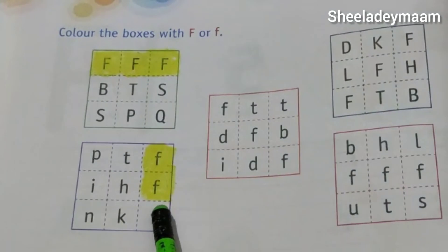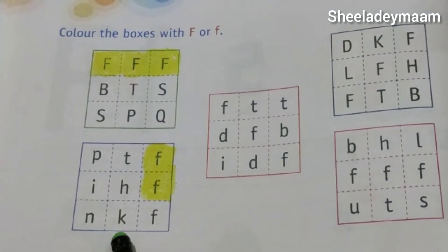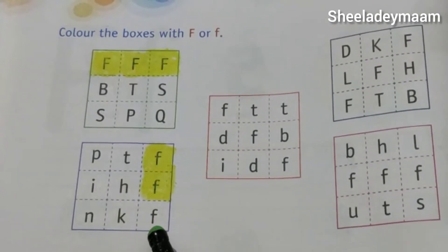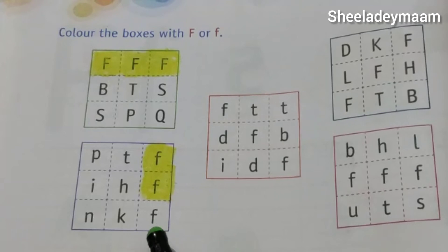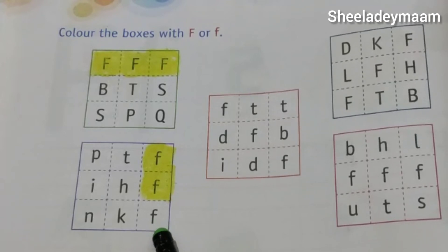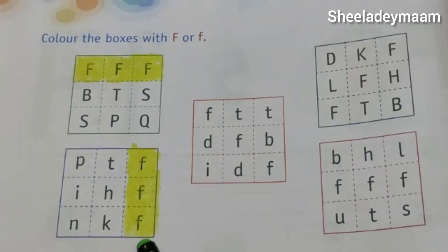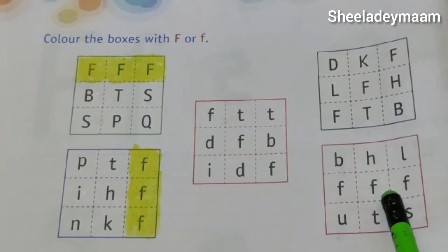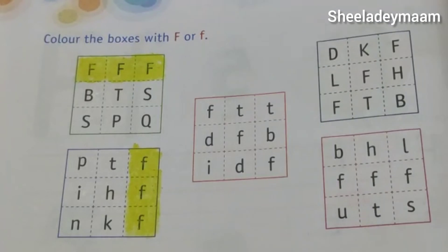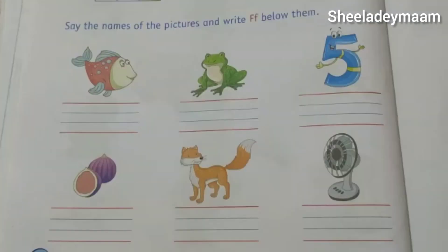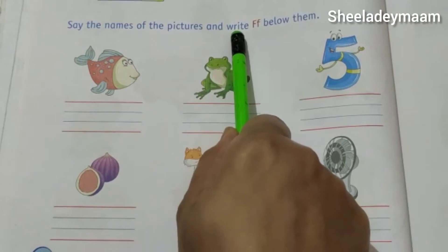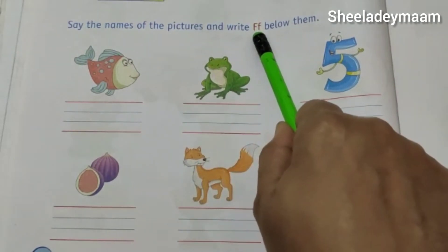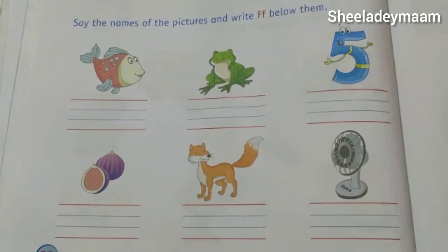Our next letters are: this is letter N, and this is letter K. And which letter is this? Yes children, this is letter F. Now we have to color this box. So in the same way you have to do this. Now let's move on to the next question. Our last question is: say the names of the pictures and write capital letter F and lower case F below them. In this question we have to write capital letter F and small letter F below the picture.